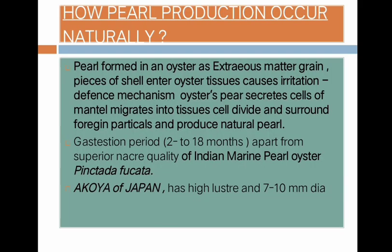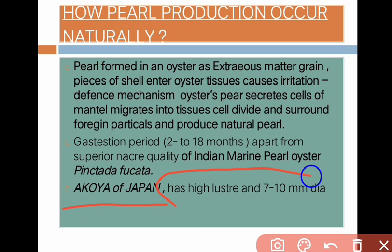Next, how does pearl production occur naturally? A pearl is formed in an oyster when an extraneous matter - a grain or piece of shell - enters the oyster tissue and causes irritation. As a defense mechanism, cells of the mantle migrate into the tissue, divide, surround the foreign particles, and produce a natural pearl. The gestation period is 2 to 18 months. Apart from Indian marine pearl oyster, Pinctada fucata, Akoya of Japan has high lustre and diameter of 7 to 10 mm.